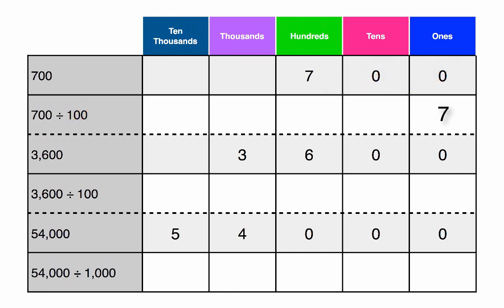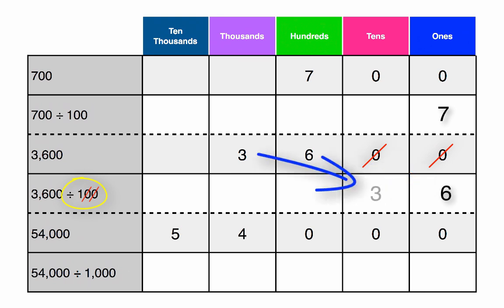Now let's do the next problem together: 3,600 divided by 100. How many zeros does 100 have? 2. Go ahead and cross out the 2 zeros in 100 and the 2 zeros found in 3,600. How many place values will we need to move? 2. The 6 moves from the 100s to the 1s and the 3 moves from the 1,000s to the 10s, making our answer 36.